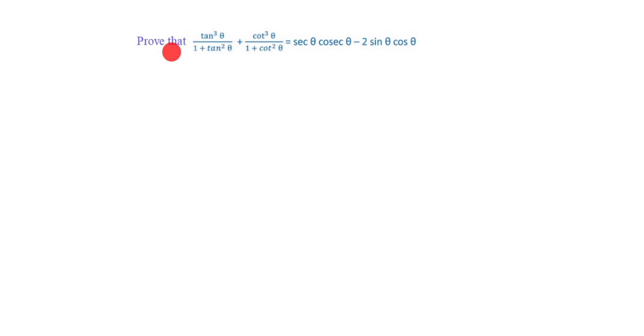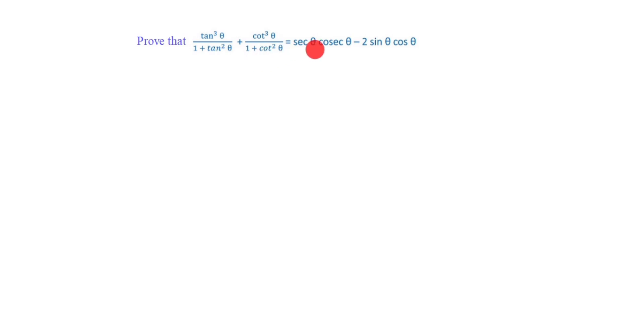Hi friends, today we are going to learn about a trigonometry proof. This is a board exam 2023 question. We will solve this problem. Prove that tan³θ / (1 + tan²θ) + cot³θ / (1 + cot²θ) is equal to secθ · cosecθ minus 2sinθcosθ.